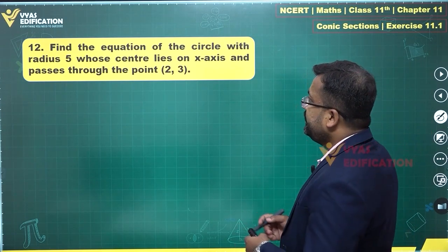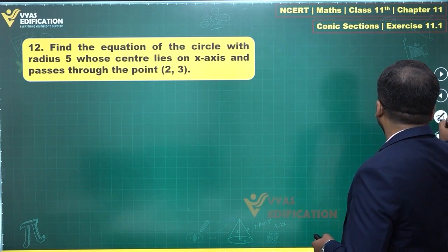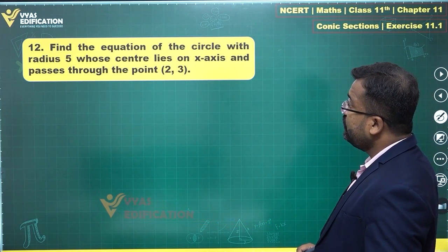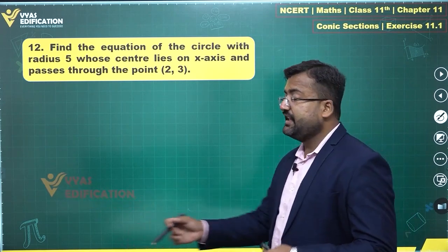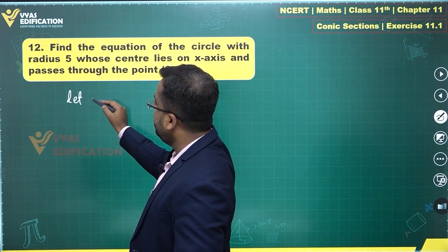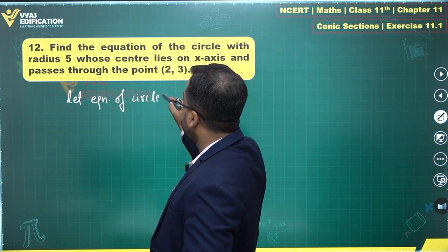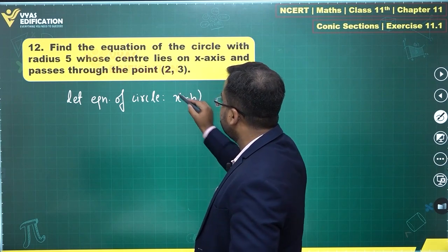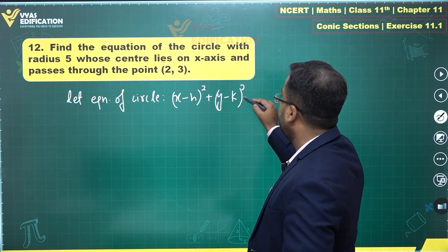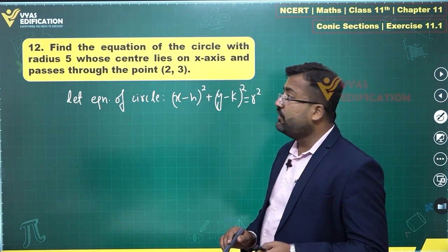Let us discuss this twelfth question. The question says: find the equation of a circle with radius 5 whose center lies on the x-axis and passes through the point (2, 3). Let the equation of the circle be x minus h squared plus y minus k squared is equal to r squared.